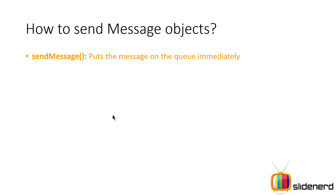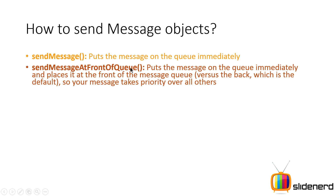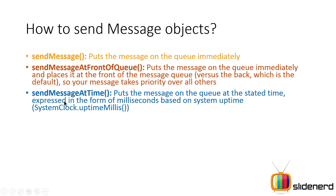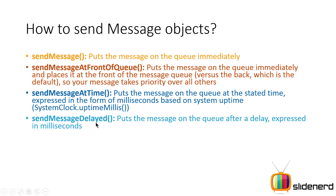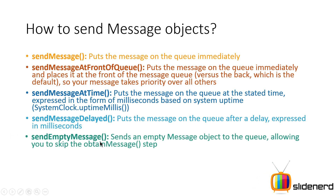There are several methods to send messages. sendMessage puts the message on the queue immediately. sendMessageAtFrontOfQueue places your message at the front, giving it priority over others so the Looper processes it first. sendMessageAtTime lets you set a specific time interval in milliseconds. sendMessageDelayed lets you specify a delay amount in milliseconds. sendEmptyMessage lets you send an empty message without calling obtainMessage. These are all just different variations of the same send message operation.